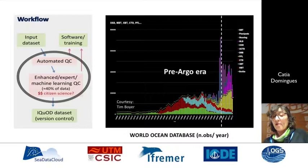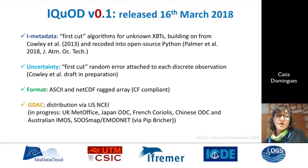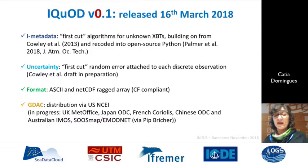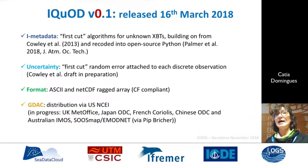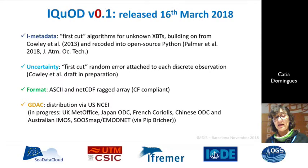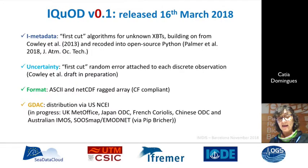We need to do a lot of work in this historical era. This is ACOT version 0.1, released early this year — it's just the tip of the iceberg. We haven't touched the data itself at the moment; we have only added flags. These flags are for intelligent metadata and for uncertainty — mostly random errors. We have been working on the format to be consistent with Argo floats data. At the moment the data has been released at the US NCEI, and we are working to have it released on other websites as well.